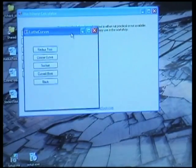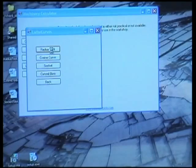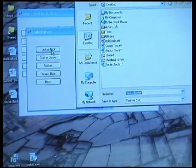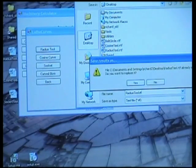This brings you up an array of options. It's got a radius, a cosine, a socket, a curved bore. We're just going to cut a radius. Save it to the default file.